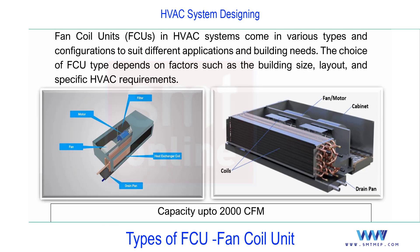The components of an FCU are simple: a heat exchanger coil (evaporator for cooling, heating coil if connected to a boiler or VRF), a fan with motor inside the casing — one or two fans depending on capacity — and filters. If it is a two-pipe FCU there are two pipes; a four-pipe FCU has four pipes for separate heating and cooling circuits.